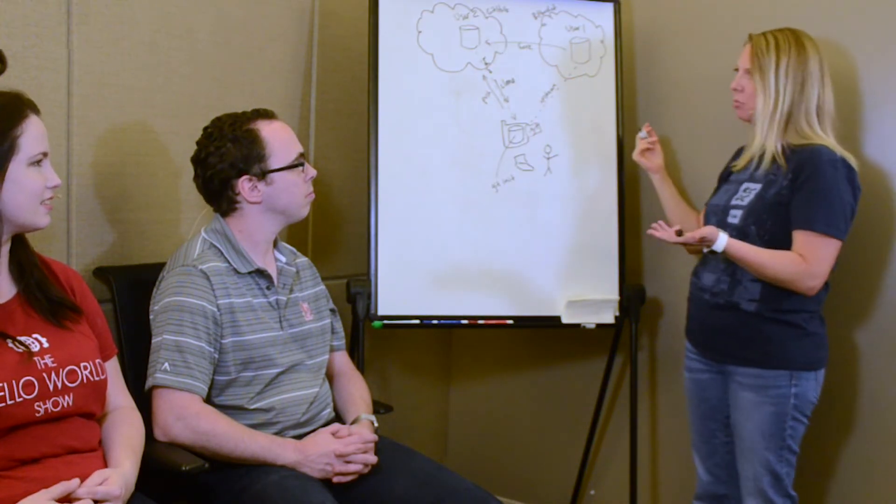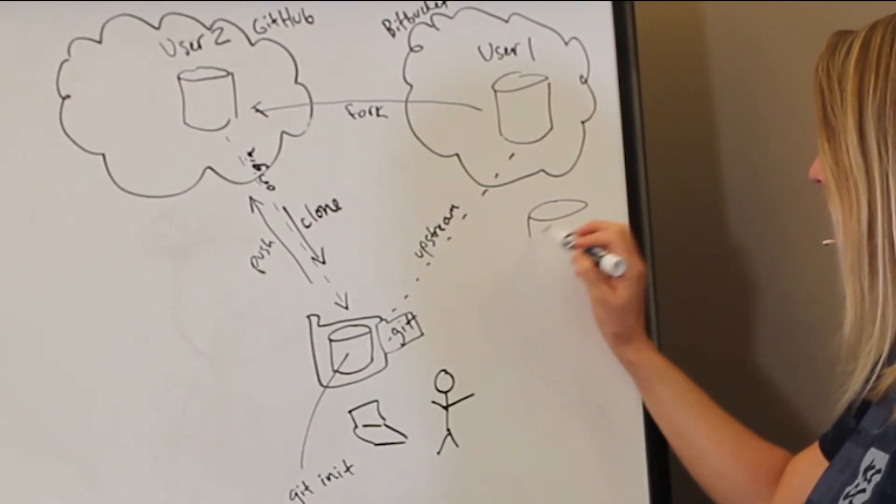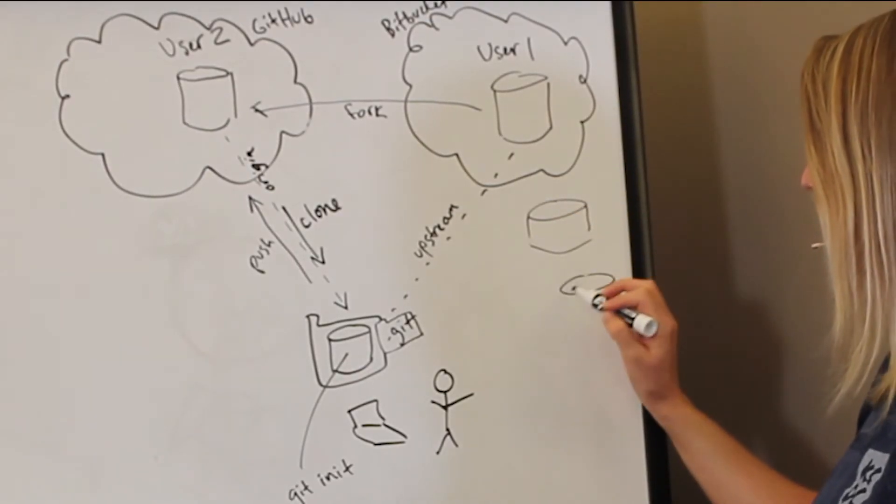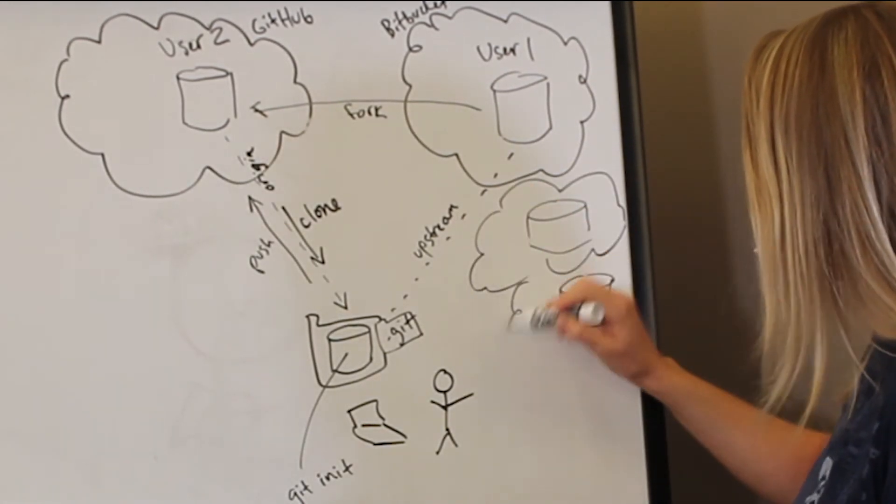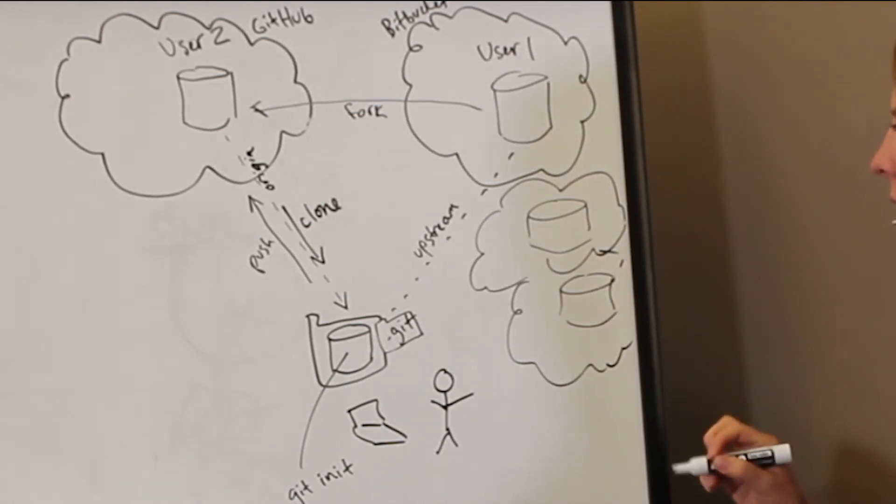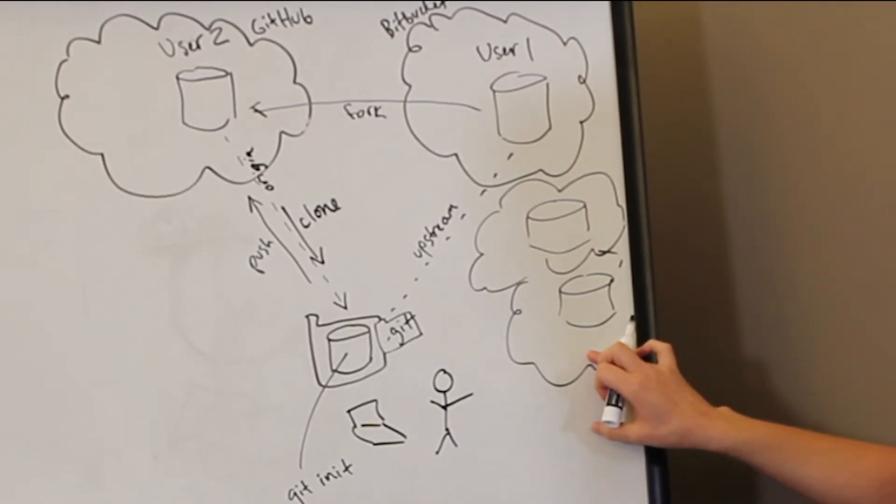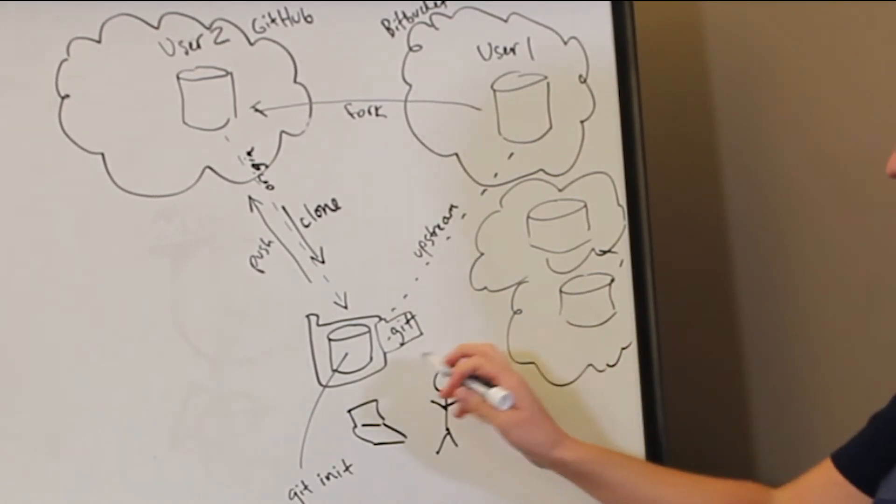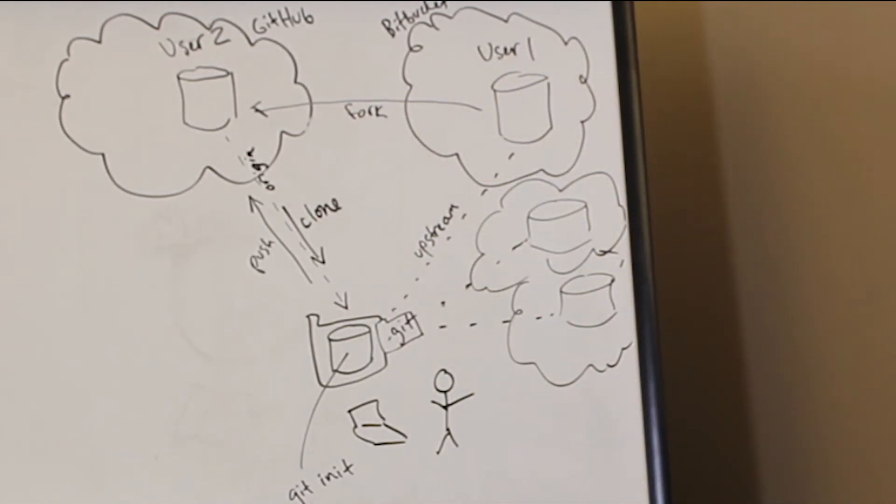Of course, because I mentioned remotes are just connections to any repository, you could have many, potentially. You could have all different kinds of places where you host these or make them available, I guess. And you can even set up your own Git server. You could set that up using a machine sitting in your basement or something and push to that if you wanted to. They're all just considered remotes. So that's kind of the basics of Git. Do you guys have any questions as far as this goes or next steps?